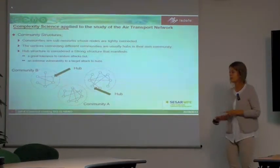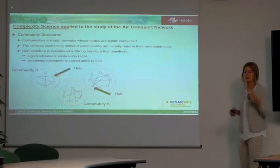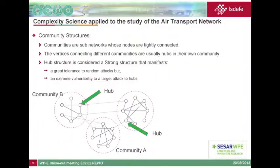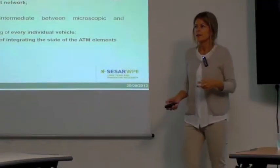The air transportation network also presents community structures — sub-networks where nodes are tightly connected. Some nodes connecting different communities tend to be hubs located at vertices of communities. The hub structure manifests great tolerance to random attacks but extreme vulnerability to targeted attacks on hubs.